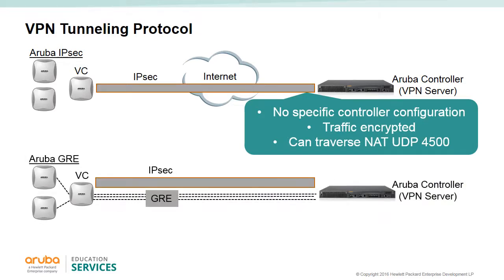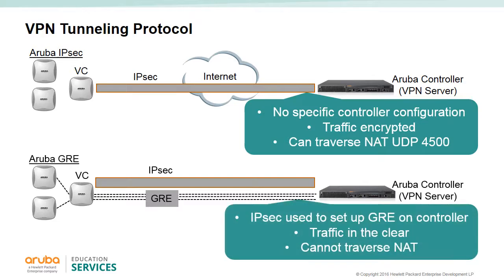Aruba GRE does not require any configuration on the Aruba mobility controller because it acts as a GRE endpoint. It is only supported with an Aruba controller. IAPs set up an IPSec tunnel to program the controller with a data path, which in turn sets up the GRE tunnel — no manual GRE configuration is needed on the controller. The IAPs have a peer GRE tunnel used to transport client traffic only. L2 modes of operation are supported, and GRE failover is supported.